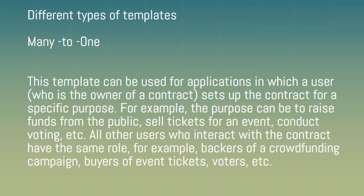Different types of templates. Many to one: This template can be used for applications in which a user who is the owner of a contract sets up the contract for a specific purpose — for example, to raise funds from the public, sell tickets for an event, conduct voting, etc. All other users who interact with the contract have the same role, such as backers of a crowdfunding campaign, buyers of event tickets, voters, etc.